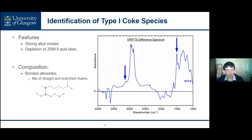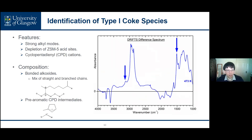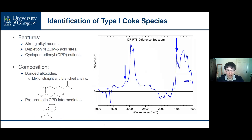The coke species contains one other component producing additional peaks, in the form of cyclopentadienyl cations, which are the intermediate species in the reaction converting straight chain oligomer alkoxides into aromatic species over ZSM-5. We specifically do not observe any aromatic products but do observe a population of these pre-aromatic cyclopentadienyl intermediates at this temperature.